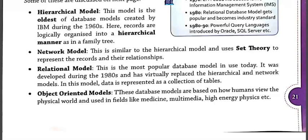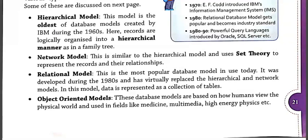This model is quite similar to the hierarchical model and uses set theory as a link for the representation of records and their relationships. The relational model is one of the most common database models, which was developed during the 1980s and is quite better than the network model as well as the hierarchical model. This database model uses the concept of rows and columns, that is a table, and the data is represented in the form of a table only.